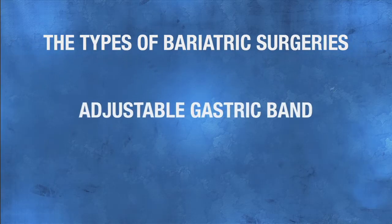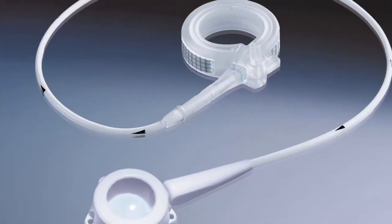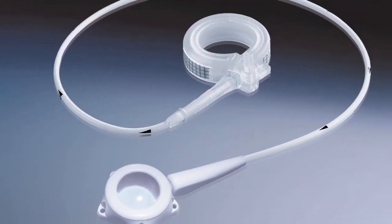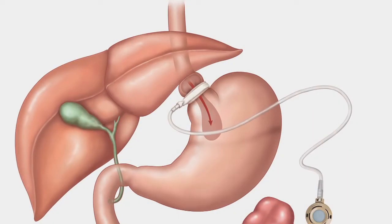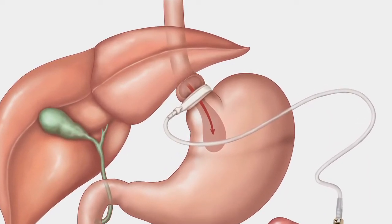The types of bariatric surgeries. Adjustable gastric band surgery involves only one weight loss mechanism: restriction. An inflatable band is placed around the upper part of the stomach to create a new stomach of less than 30 cc's or one ounce.